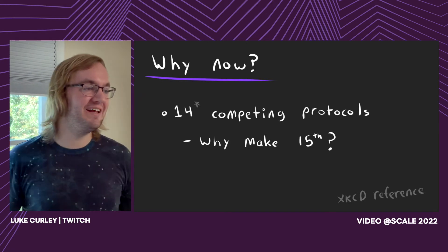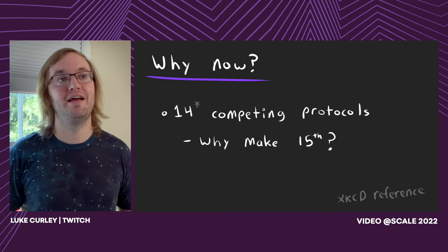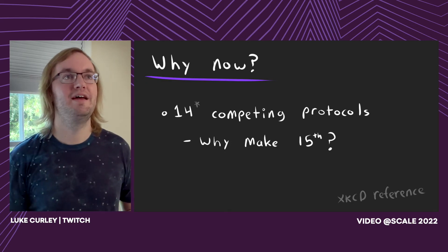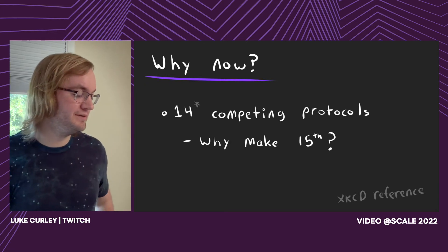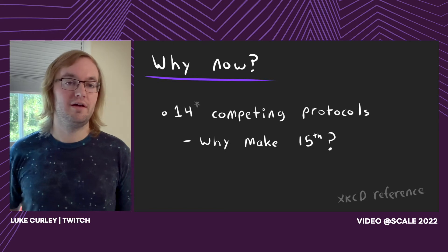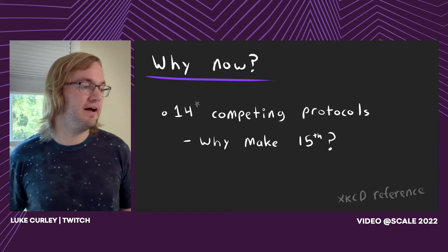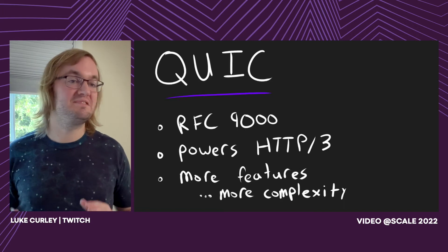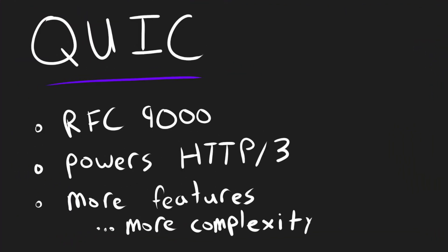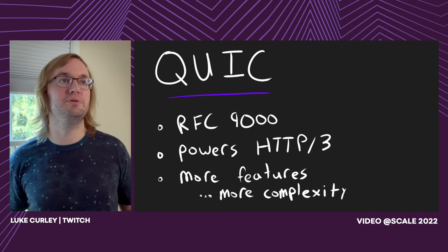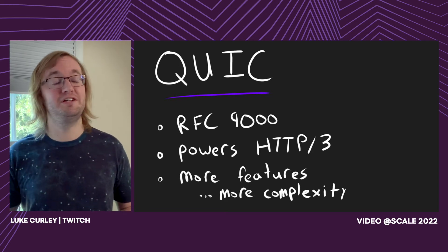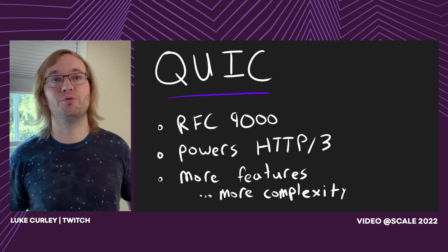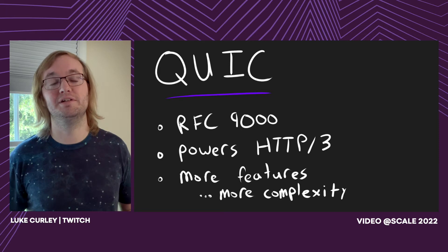The question is why now - why am I here talking about media over QUIC, pushing a new competing protocol? There's already a bunch of UDP-based protocols. Why not use SRT or RIST or some flavor-of-the-month protocol? Why make a new one? Fundamentally, now's the time because TCP is dead. TCP had a great run, but it's being replaced by QUIC. You're going to see a lot more QUIC as a TCP replacement, and sometimes even a UDP replacement, because it was designed to power HTTP/3 and fix the fundamental issues with TCP. With that comes a lot more features and complexity - it's effectively 30-40 years of evolution in the protocol research space.